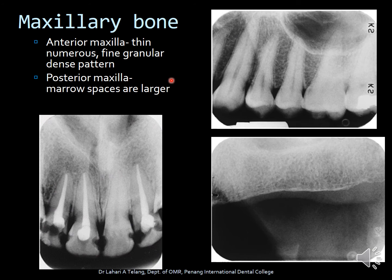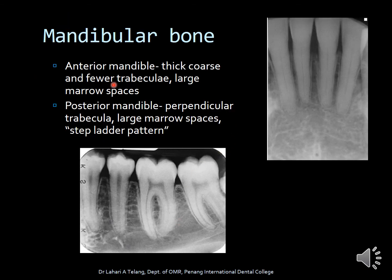The pattern of bone in the maxilla differs between the anterior and posterior regions. In the anterior maxilla, you have thin, numerous, fine granular dense trabeculae, whereas in the posterior maxilla the marrow spaces are slightly wider. In the mandible, the anterior region generally has thick, coarse, and fewer trabeculae with larger marrow spaces. In the posterior mandible, there are perpendicular trabeculae in large marrow spaces — this pattern of perpendicular lines is called the step-ladder pattern of trabeculae.